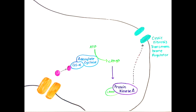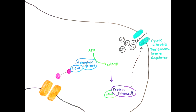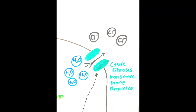Upon activation, protein kinase A causes an ion channel called the cystic fibrosis transmembrane regulator (CFTR) to open. The opening of CFTR causes chloride ions to leave the cell, creating an extracellular osmotic gradient that results in water exiting the cell and causing severe diarrhea.